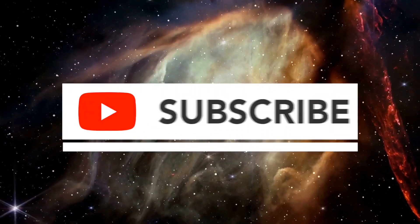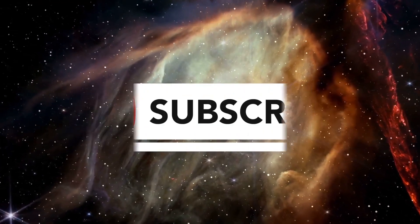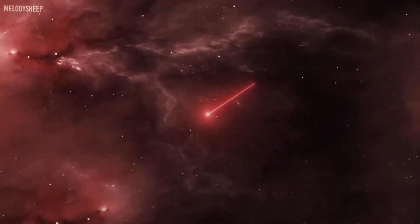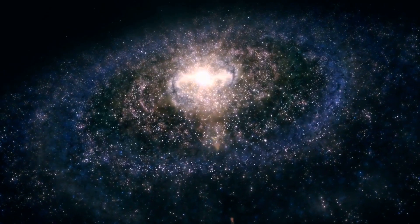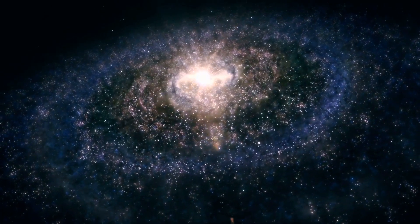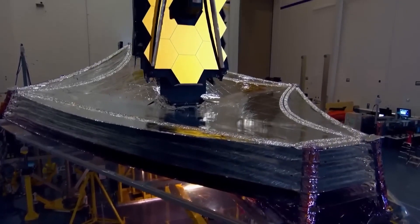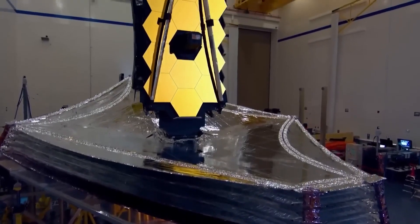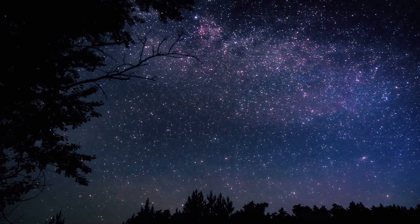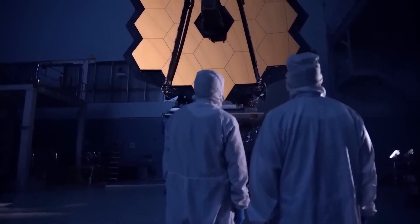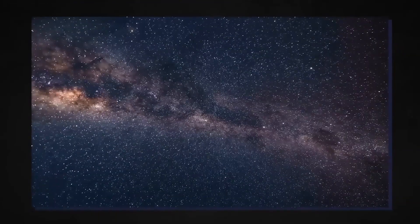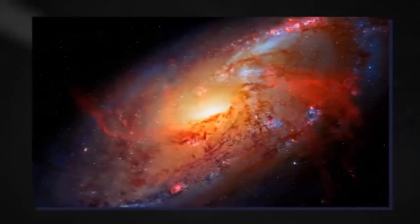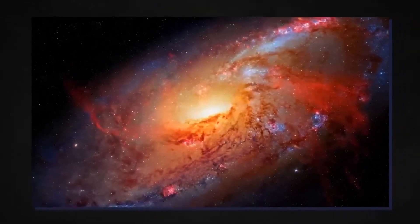This remarkable image showcased an astonishing 50,000 sources emitting infrared light, providing a deep and expansive perspective that could potentially revolutionize our understanding of galactic evolution. Embedded within this captivating image was a brilliant foreground star from our Milky Way. The star exhibited unique diffraction spikes, a mesmerizing pattern created by the James Webb Telescope itself. Clusters of luminous white light shimmered, surrounded by an ethereal haze.